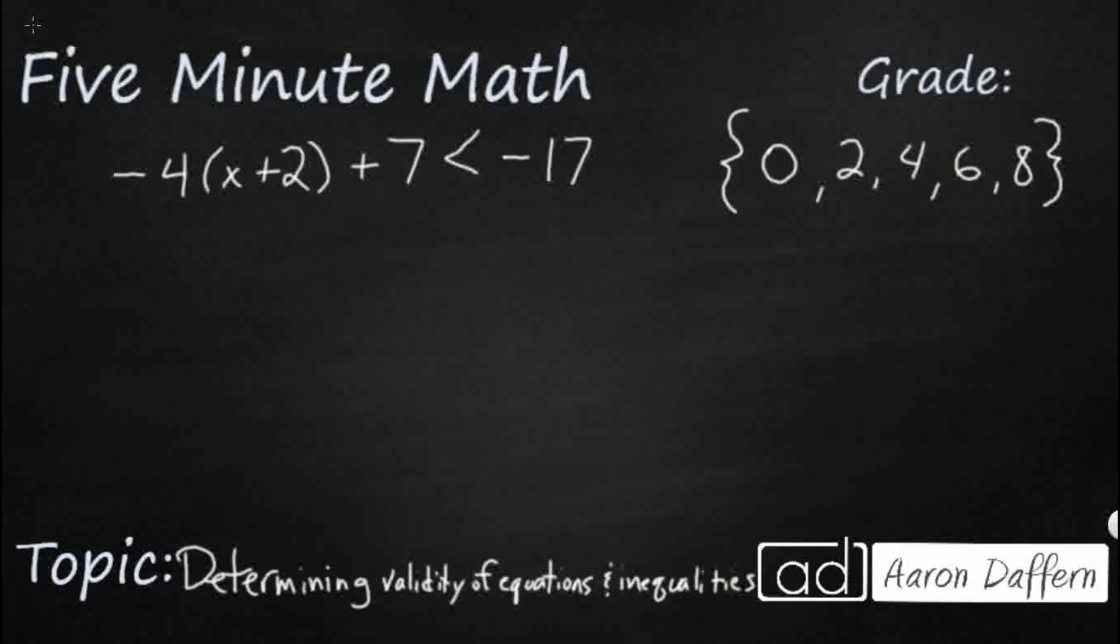So we have a basic inequality here, negative 4, parentheses, x plus 2, plus 7, and then we've got this less than negative 17, and we have a solution set over here. So we need to plug these in, 0, 2, 4, 6, and 8, and see which, if any of these, actually make this true.